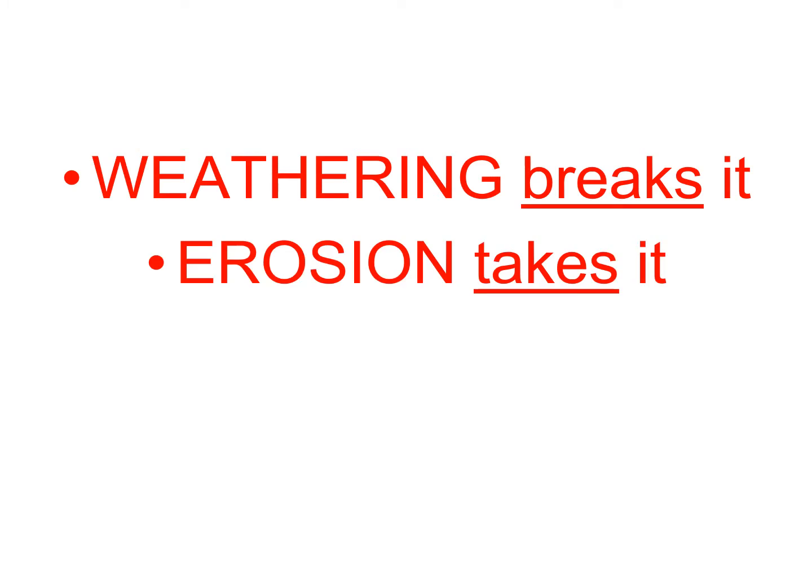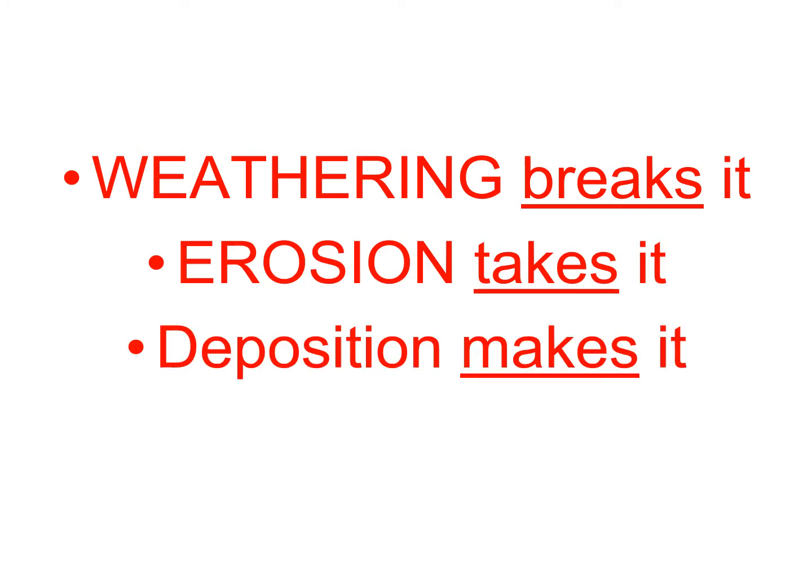This is a really easy way of remembering the difference between these three words. Some people think that weathering and erosion mean the same thing, and that is not true. Weathering is when rocks actually break or a landform breaks. Erosion is when pieces move — rocks or sediment moves — so that's why we say it takes it, like a river or wind is taking it. And then deposition makes it. Deposition is whenever that stuff gets dropped off, and it's going to form something new, like a delta or a sand dune.